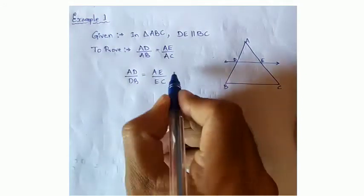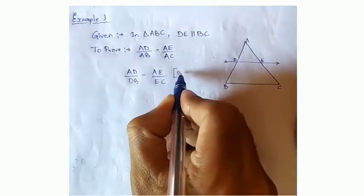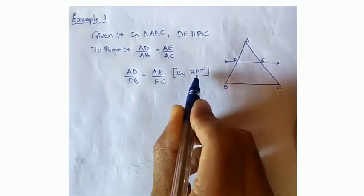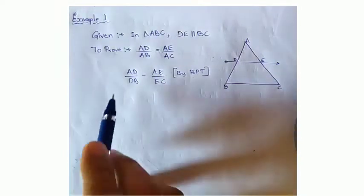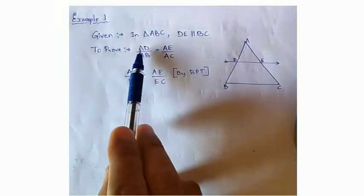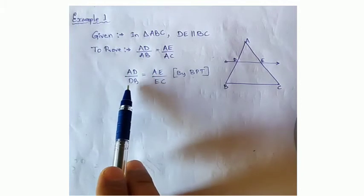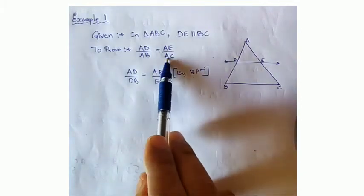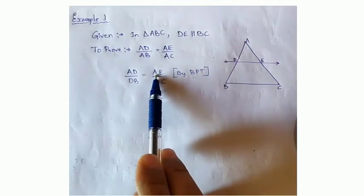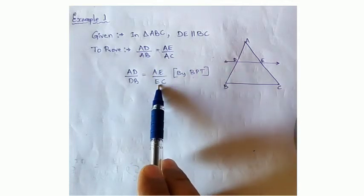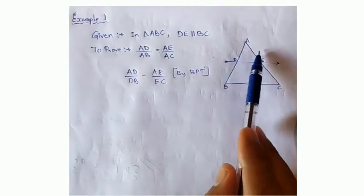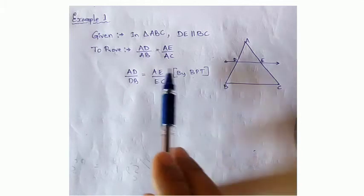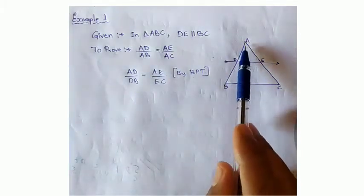By BPT, we get AD by DB equal to AE by EC. Now, what we need? We need AD by AB, but we are getting AD by DB. Here also, AE by AC we want, but we are getting AE by EC. In the figure we are getting only part of the whole side, but in the proof we need the total AB.